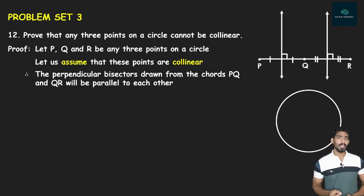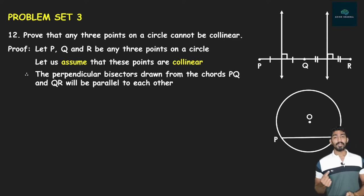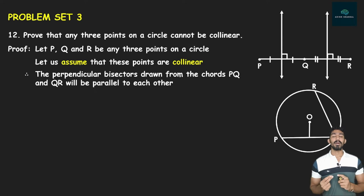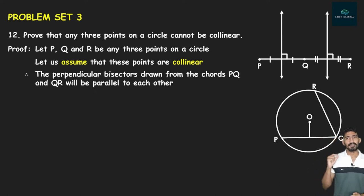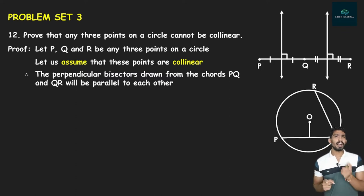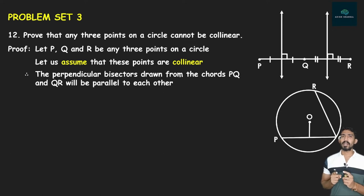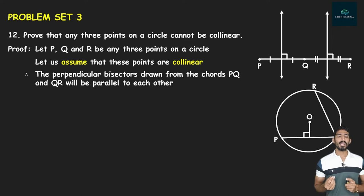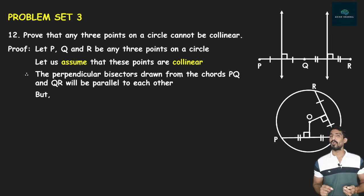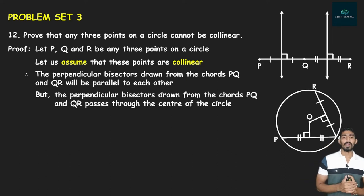बट scene कुछ अलग है। अगर मैंने circle लिया और तीनों points को बताया — circle with center O है, एक chord है PQ और एक chord है QR। तो 9th standard में हमने पढ़ा था: the perpendicular drawn from the center to the chord bisects the chord। उसका converse यह है कि perpendicular bisector हमेशा center से ही गुजरेगा। तो अगर मैंने perpendicular bisector बना दिया PQ को, वो center से गुजर रहा है; और QR को perpendicular bisector बनाया, वो भी center O से गुजर रहा है। The perpendicular bisectors of chords PQ and QR both pass through the center of the circle।